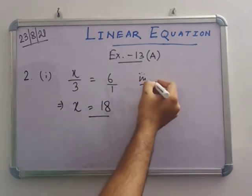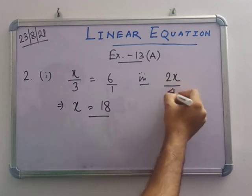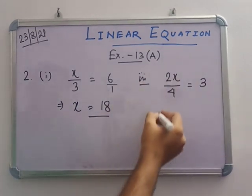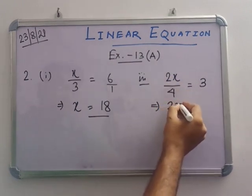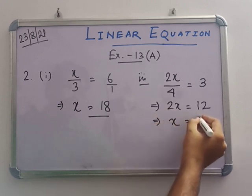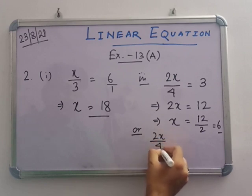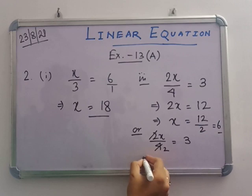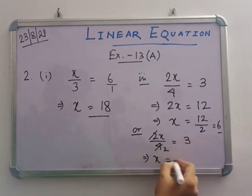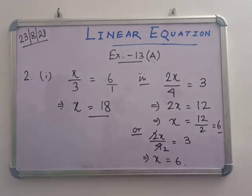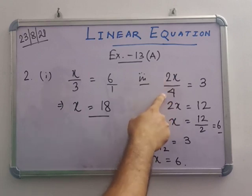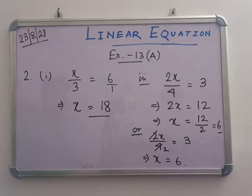In number 3: 2x by 4 equals to 3. Cross-multiplying gives 2x equals to 12, so x equals to 12 by 2, which is 6. Alternatively, 2 and 4 cancel to give x equals to 3 into 2, which is also 6. You can use your own process as long as it is correct. Verification: 6 into 2 is 12, and 12 by 4 equals 3. LHS equals RHS.